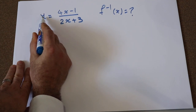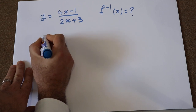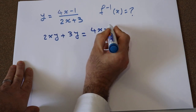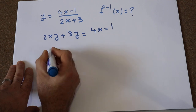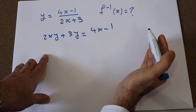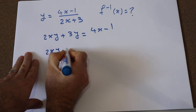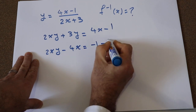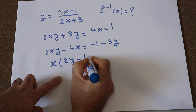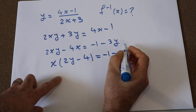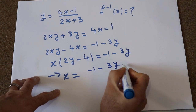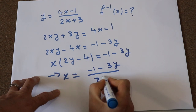To do that, I multiply y by the denominator term (2x plus 3). That gives 2xy plus 3y equal to 4x minus 1. I bring the 4x to this side, grouping all terms containing x on one side and the others on the other side. So 2xy minus 4x equals minus 1 minus 3y. Factoring out x gives x times (2y minus 4) equals minus 1 minus 3y.